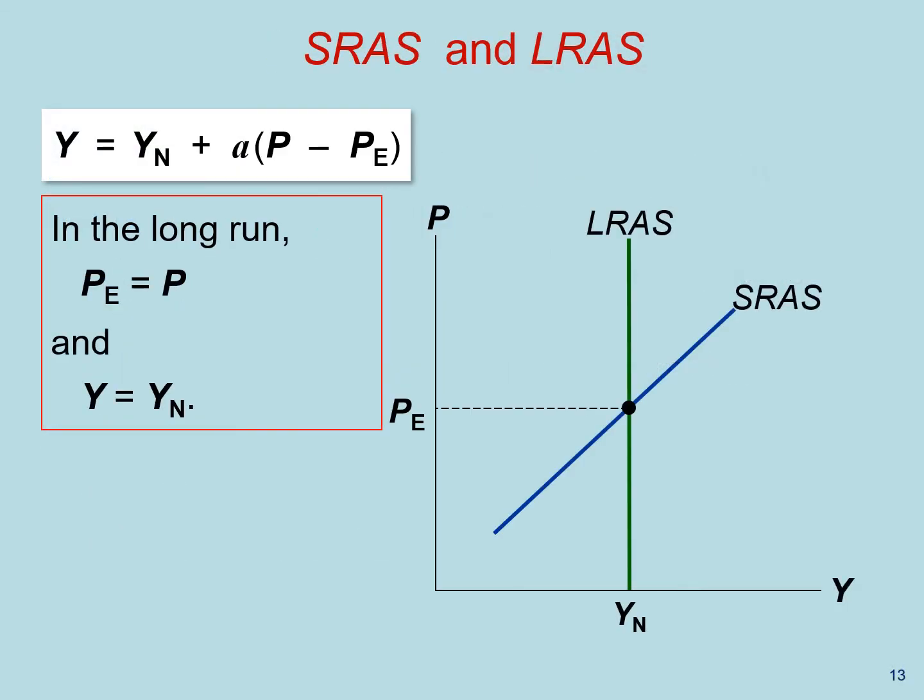So in this graph, notice that when the price level equals the expected price level, output is equal to its long run value, the natural rate of output.